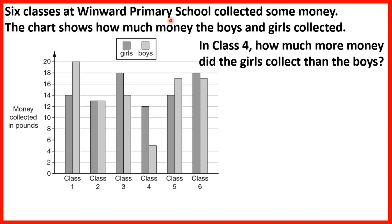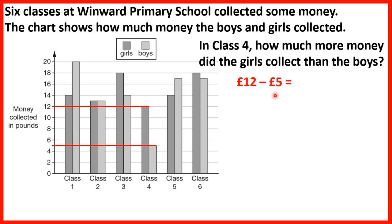6 classes at Wynwood Primary School collected some money. The chart shows how much the boys and girls collected. In class 4, how much more money did the girls collect than the boys? Girls are dark grey and boys are the light grey bar. The girls collected 12 pounds and the boys collected 5 pounds. To find how much more, we subtract 5 pounds from 12 pounds, and that gives us 7 pounds. So the girls collected 7 pounds more.